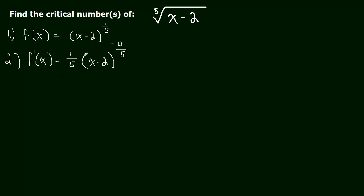Okay, and then I want to rewrite that a little bit. Let me use some different colors so it's not just all white. So this will be one over x minus 2 to the four-fifths. Or you could think of it as the fifth root of x minus 2 to the fourth. Okay, that's the derivative.